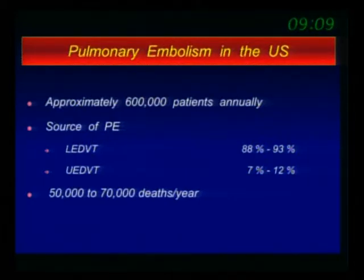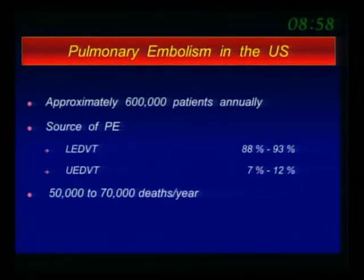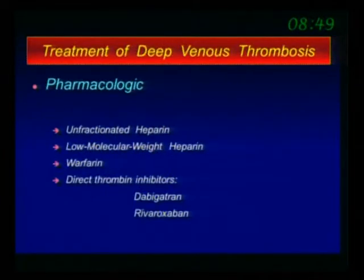There continue to be over 600,000 people who have PE in the United States. That's really a tremendous burden for healthcare in the U.S. Most of these PEs come from the lower extremities, as you know, and some come from upper extremities. We are strong believers that upper extremities need to be treated aggressively. There are about 50,000 to 70,000 deaths caused by PE.